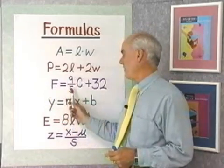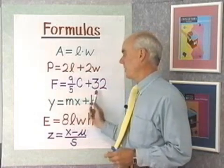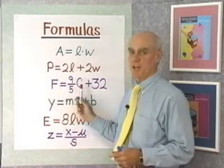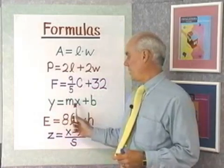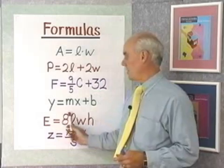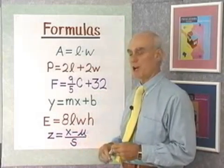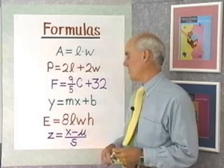F equals 9 fifths C plus 32, that's the formula that gives the relationship between the two different temperature scales, Fahrenheit and Celsius. Y equals MX plus B, this turns out to be an important formula in mathematics. It's the formula for the equation of a line with a slope of M and a Y-intercept of B.